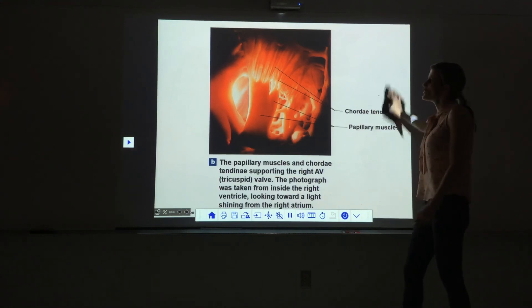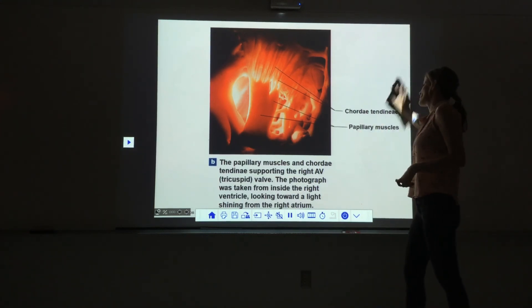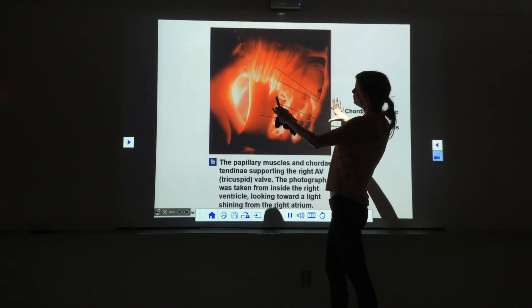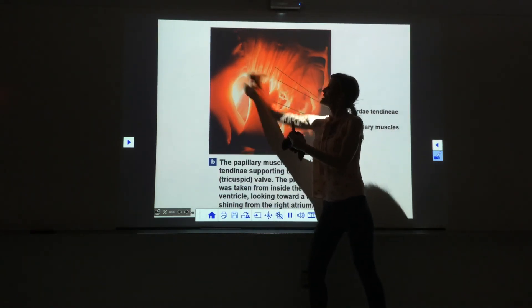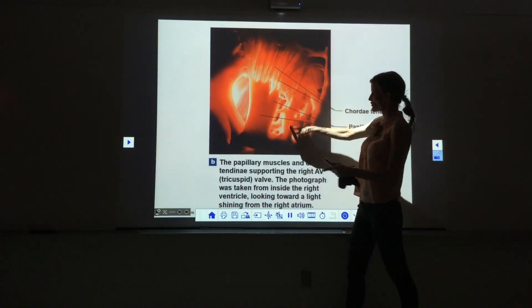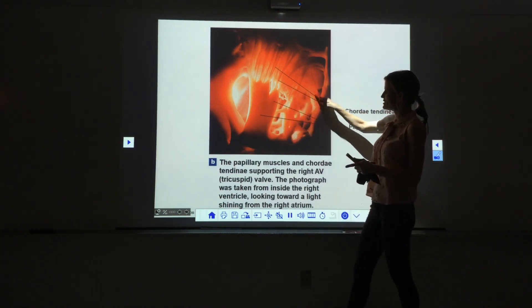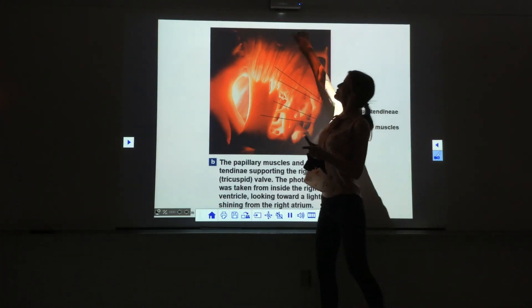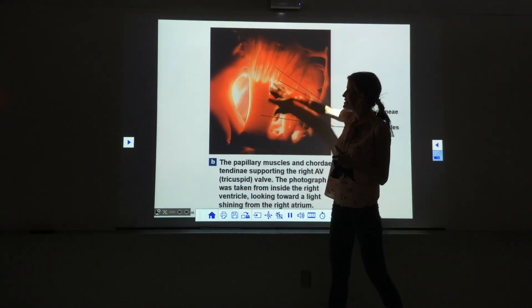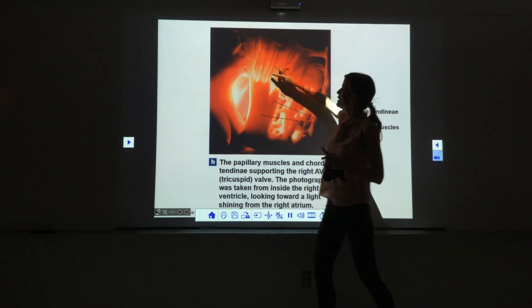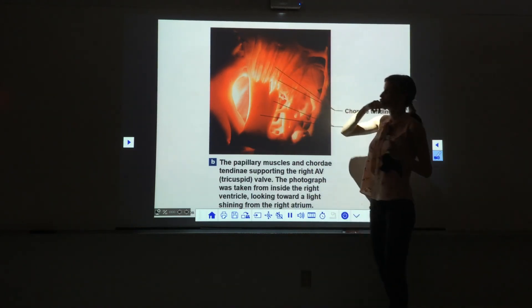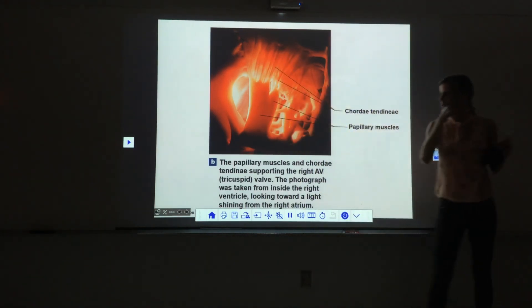This image shows the valves, chordae tendinae, and papillary muscles inside a ventricle. The light is shining from the atrium so you can see the muscular ridges in the ventricle. The flaps of the valve are visible at the top, with papillary muscles and all the attached chordae tendinae shown clearly — they are really strong.